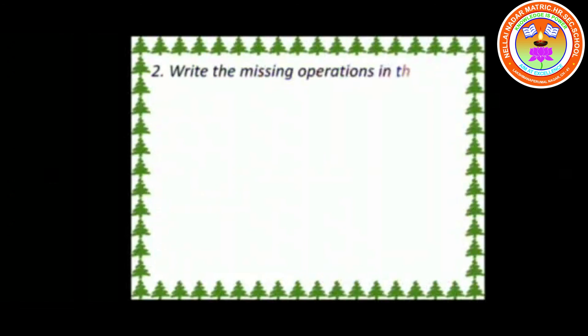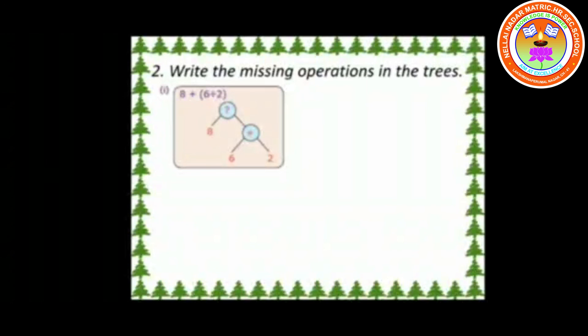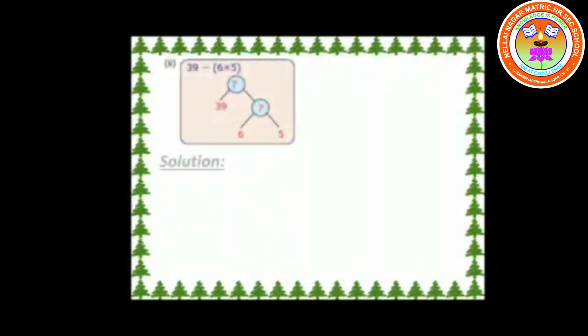Second section: write the missing operations in the trees. First one: the only missing operation is the symbol plus. Second one: look at the question — the symbol minus is the node and the symbol × is its branch.